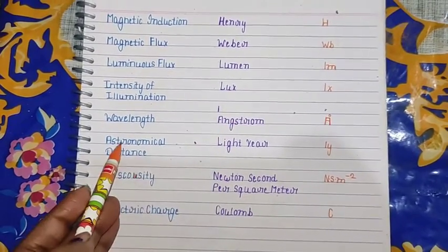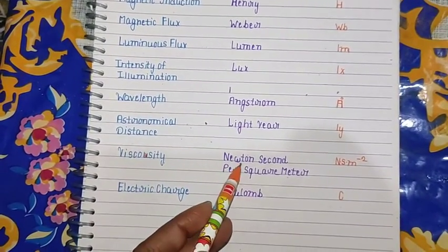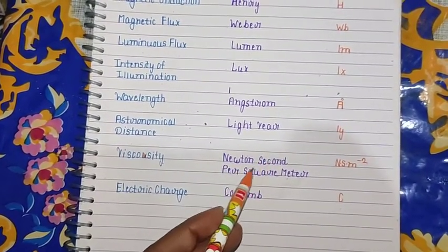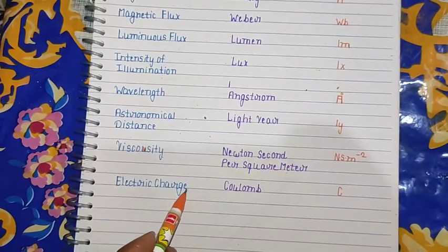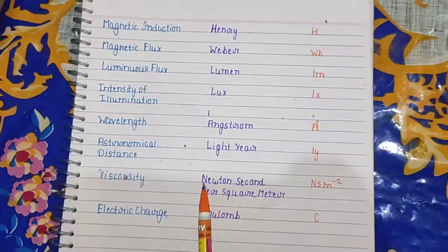Astronomical distance - light year (ly). Viscosity - Newton second per square meter (N·s/m²). Electric charge - coulomb (C). It is very important from your examination point of view.